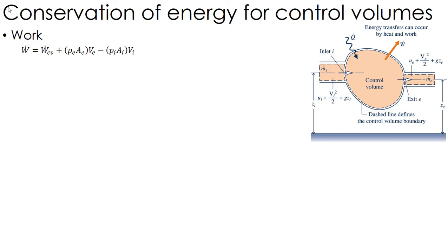Now we're going to develop the energy balance for control volumes. This is our first law equation when we're looking at control volumes where we've got flow — some mass flow coming in, some mass flow going out. You could have some Q, some W — heat and work — but our system is that control volume represented by the dashed line.